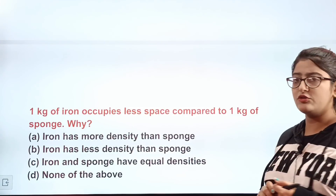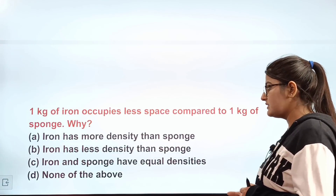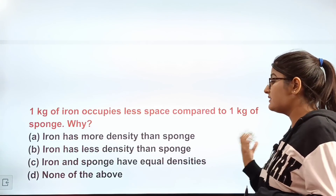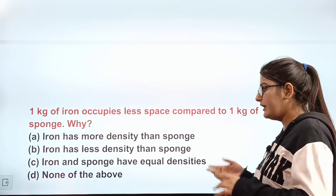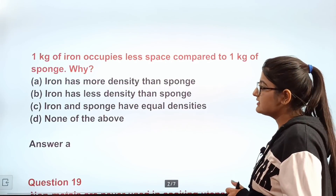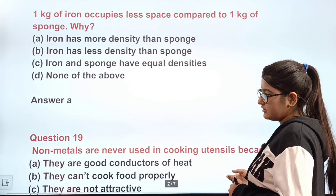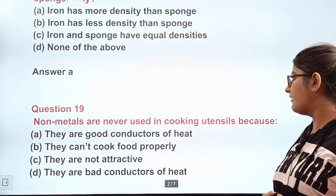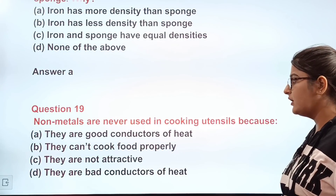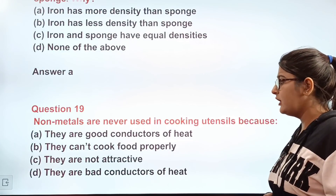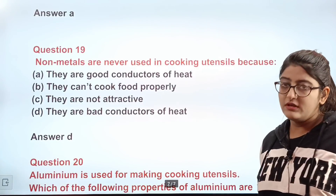Question number eighteen: 1 kg of iron occupies less space compared to 1 kg of sponge — why? A) iron has more density than sponge; B) iron has less density than sponge; C) iron and sponge have equal densities; D) none of these. The correct answer is A — iron has more density than sponge. Question nineteen: non-metals are never used in cooking utensils because they are bad conductors of heat. The correct answer is D.